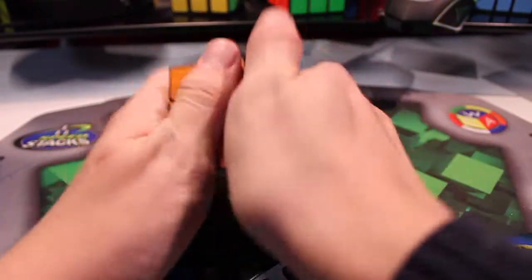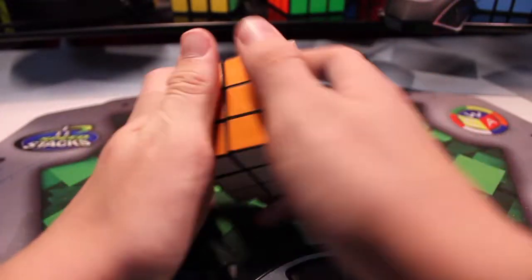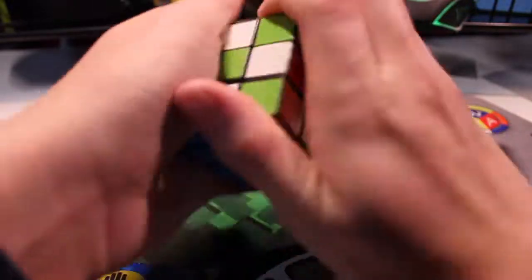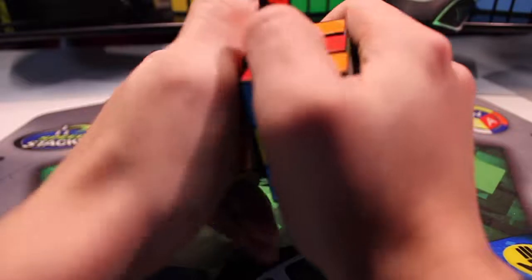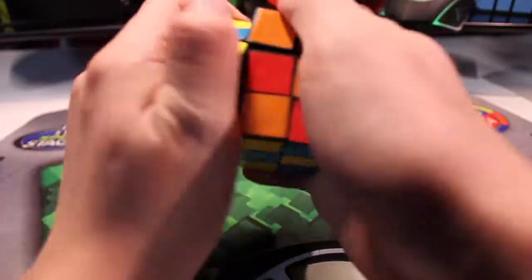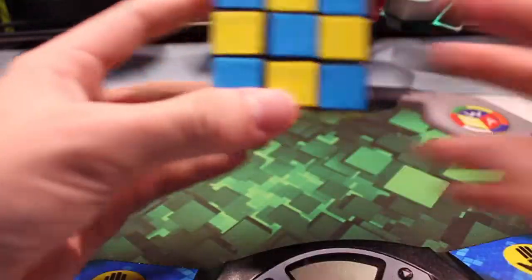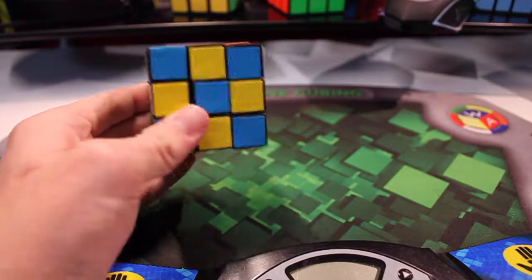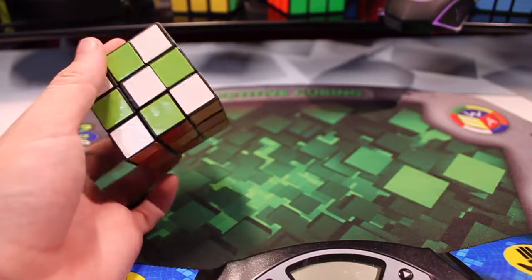Let's just try a checkerboard real quick. There we go. So you can see the checkerboard with the Japanese color scheme looks rather interesting.